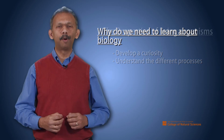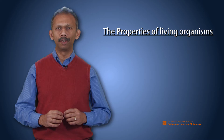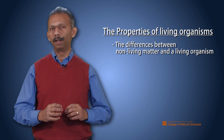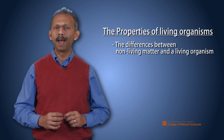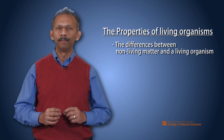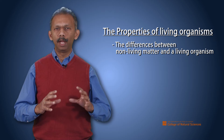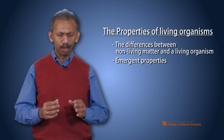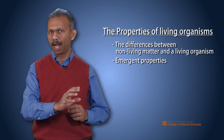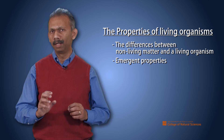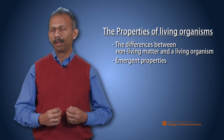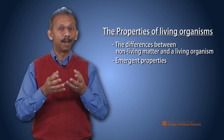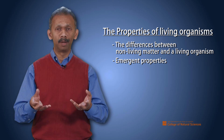The second part, covering the properties of living organisms, will address the differences between non-living matter and living organisms. The properties are considered emergent properties. For example, hydrogen and oxygen separately have their own properties, but when combined, those individual properties disappear and the properties of water emerge — that is called an emergent property.